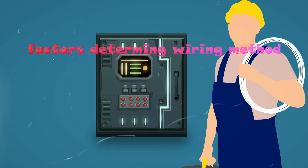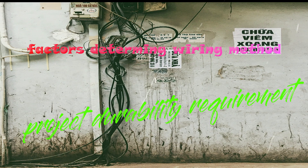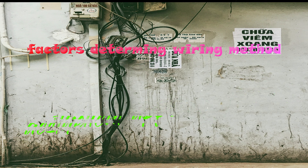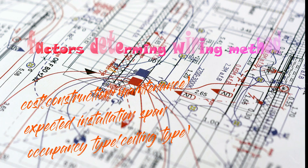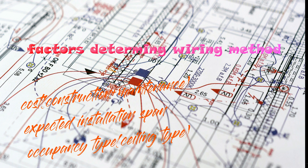The factors that determine the choice of wiring method include the durability requirement of the project, which implies the ability of the wiring system to withstand the surrounding conditions of the project type. The second is the aesthetic appeal, where the artistic impact is to be considered. We also have cost, which must include construction and maintenance cost, the expected level of installation, and the occupancy or project type — most especially the ceiling type — which needs to be considered.